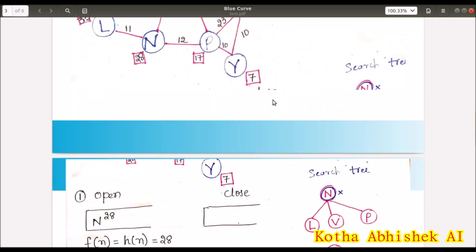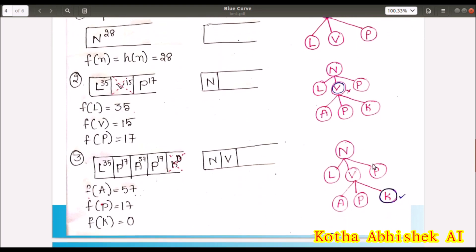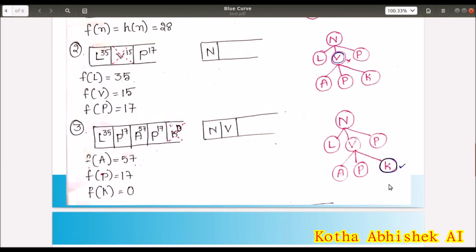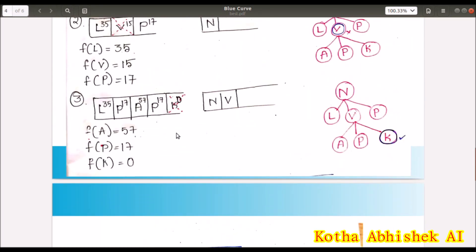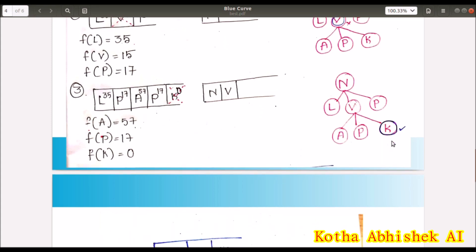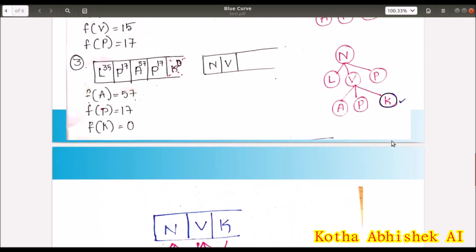Now we will write A, P and K. What are those heuristics? K have the 0. So it will be the smallest. So next we will check K. So on checking whether K is goal or not, goal test. It will become true. K is goal. So we found our goal.